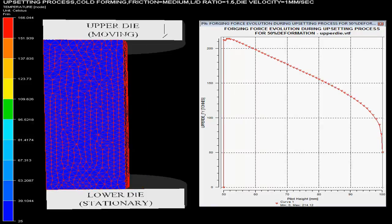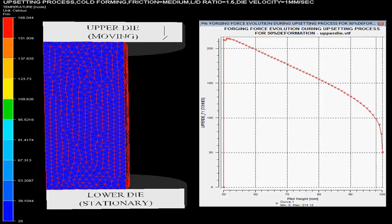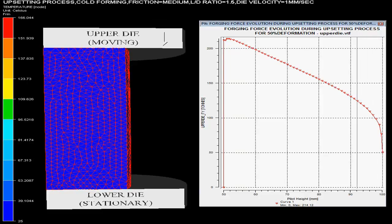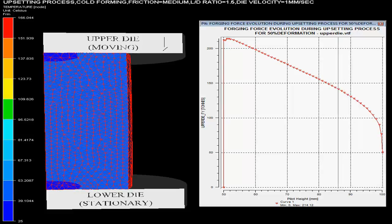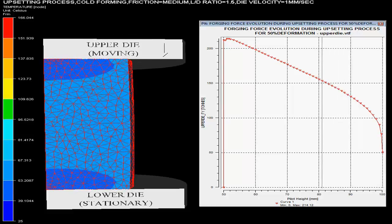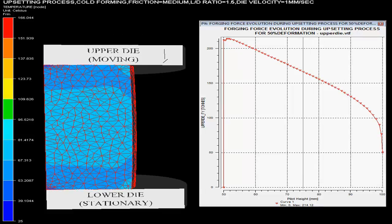The graph on the right side shows the evolution of the forging force with height of the punch. Maximum forging force required here is 214.12 ton.